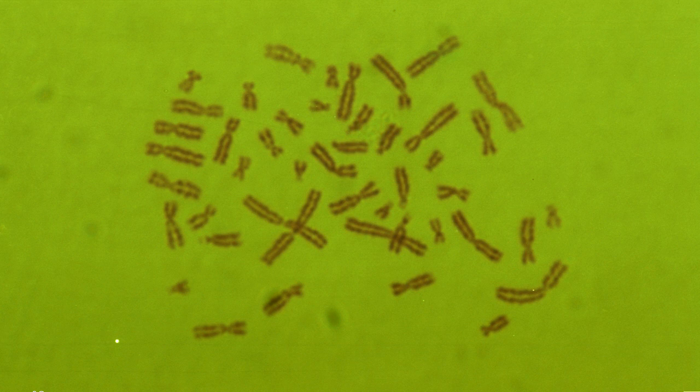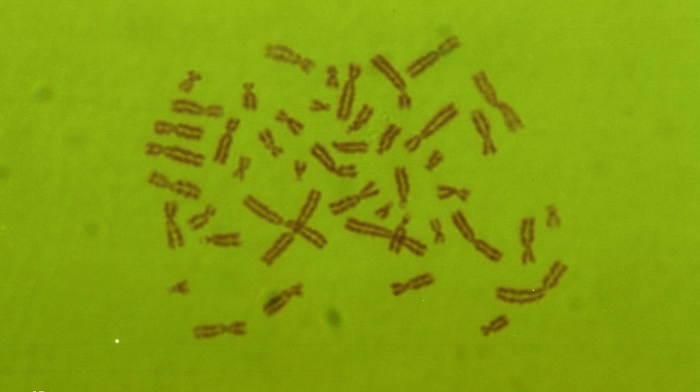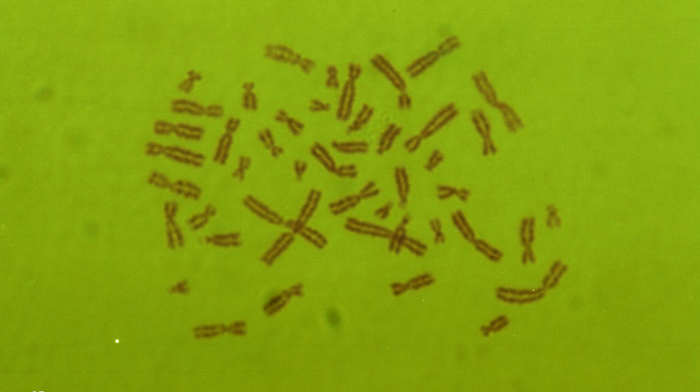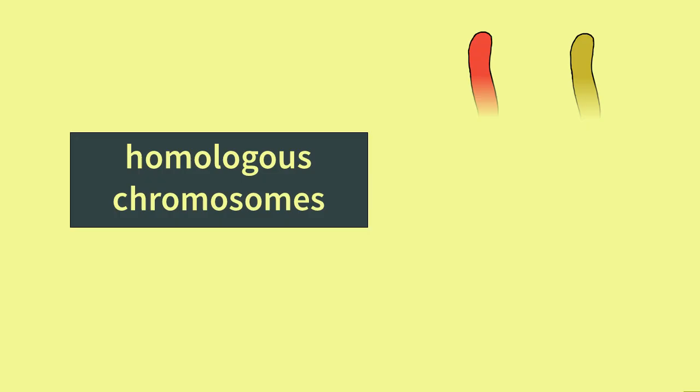Consider the human karyotype shown here. A karyotype is a photograph of chromosomes taken during mitosis. If you count the chromosomes, you will find that there are 46. This is the number of chromosomes found in all body cells. So every time a body cell divides, the daughter cells must each have 46 chromosomes.